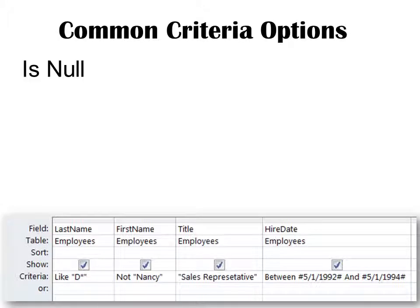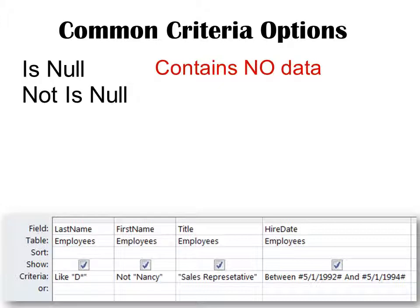Let's look at some common comparison operators. IsNull means there is no data — it does not mean zero, a tag, a dash, or any other placeholder. It means nothing at all; it's blank. The opposite of IsNull is Not IsNull, which means the field does contain data — any kind of data, including a zero or a dash. So it may not be the data you're looking for, but it means the field is not blank.